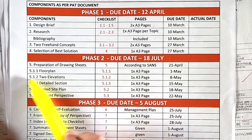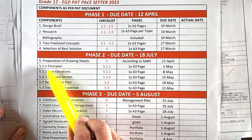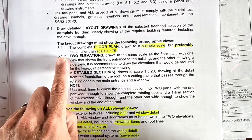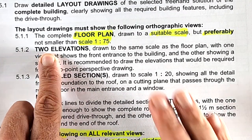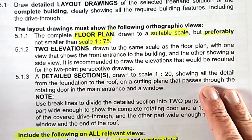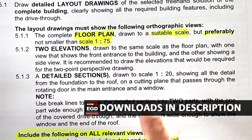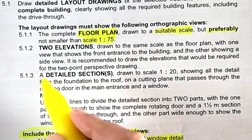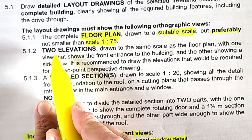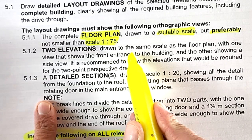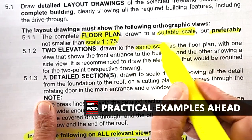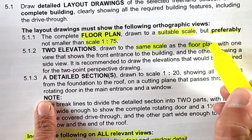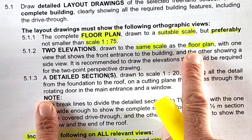To get started, we need to know what this entails. It's referenced in your actual PET document at 5.1.2 elevations on page 14, and all of this is available as a download in the description. I'll also share actual examples of what is required. Looking at 5.1.2: the two elevations need to be drawn to the same scale as the floor plan. That is absolutely critical — the same scale used in the floor plan must also be used for these elevations, which makes using the same measurements much easier.